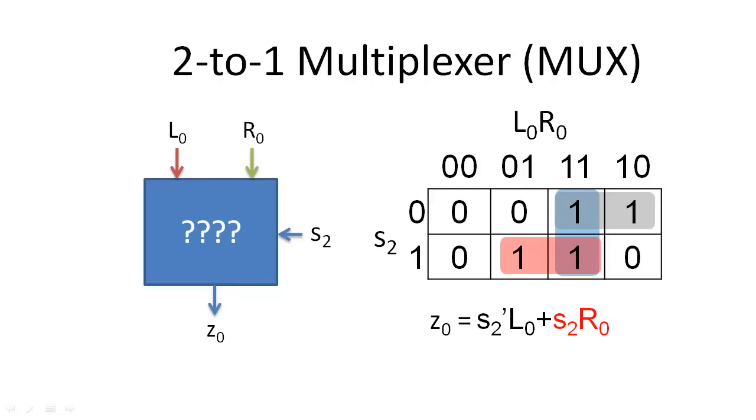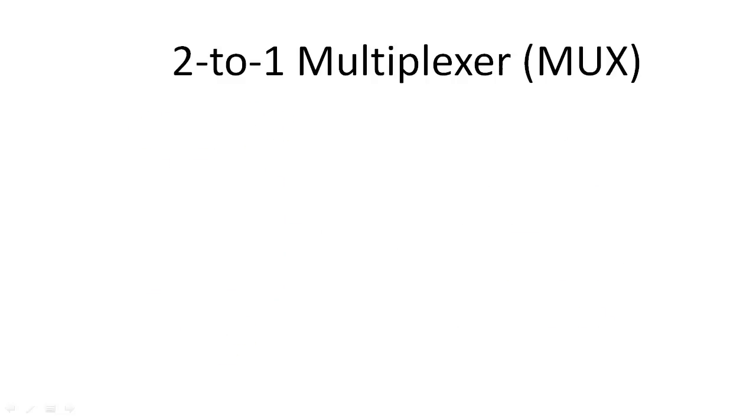This circuit is called a 2 to 1 multiplexer because it receives two data inputs and transmits one data output. Generally, we draw multiplexers as a trapezoid with the data inputs on the broad side and the data output on the narrow side.